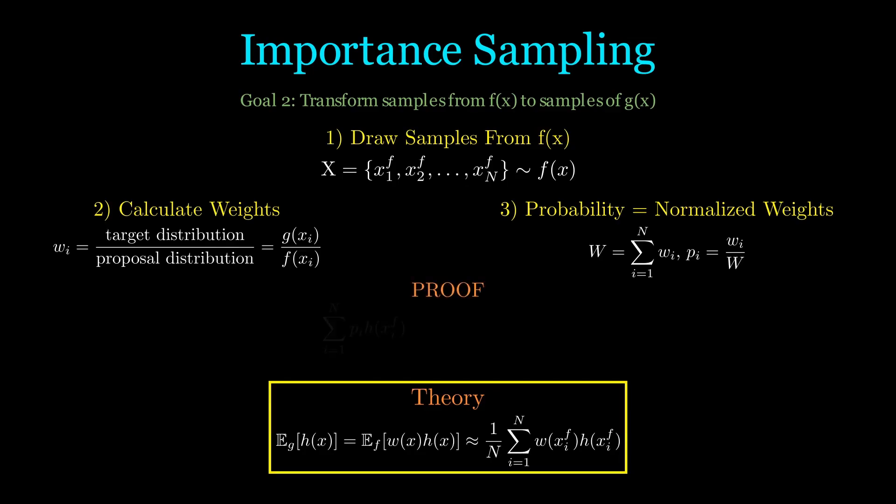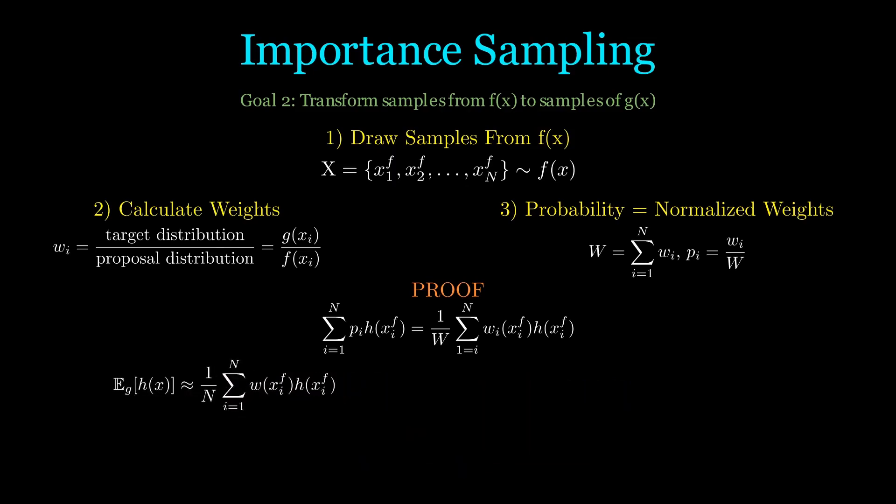Now let's show why this works. Let's take the expectation of h(x) with respect to pi. We can now rewrite it with our importance weights. Then, let's recall our theory where the expectation with respect to g of h(x) is equal to this approximate summation.